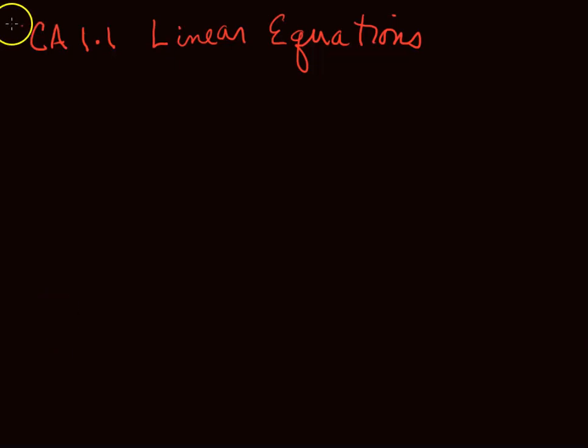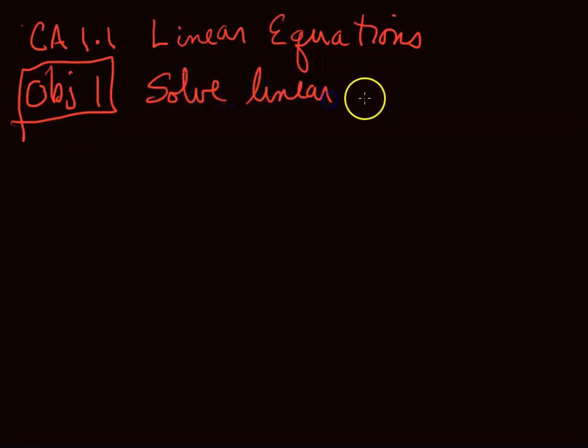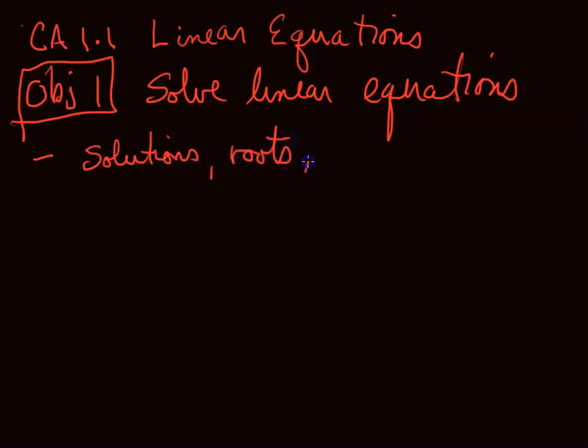College Algebra, Chapter 1, Section 1.1: Linear Equations. Our first objective is to solve linear equations. We are going to solve the easy ones first, the linear equations in one variable, but we could have equations in two or three variables. The solutions that we find for a linear equation will at most be one. The solutions are also called roots, and they're the values that satisfy the equation. Sometimes they're called zeros.